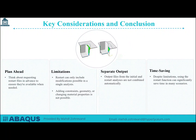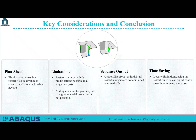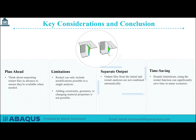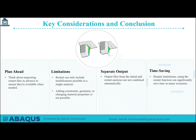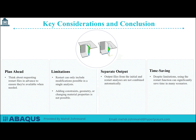As we conclude, keep these key considerations in mind. Always plan ahead and request restart files in advance to ensure they're available when needed. Remember the limitations: restart can only include modifications possible in a single analysis. Adding constraints, geometry, or changing material properties is not possible. Note that output files from the initial and restart analyses are not combined automatically. Despite these limitations, using the Restart function can significantly save time in many scenarios. Now let's move on to a practical demonstration, where we'll go through an actual Abacus model simulation to show the details and steps involved in restarting an analysis.